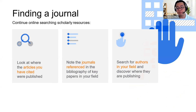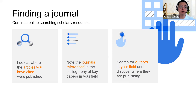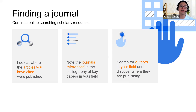If you want to be more independent, take a look at articles you have cited and see where they have been published. Note the journals referenced in the bibliography of key papers in your field and see which journals they are primarily coming from. You can also look for authors in your field to understand which journals they are currently publishing in.